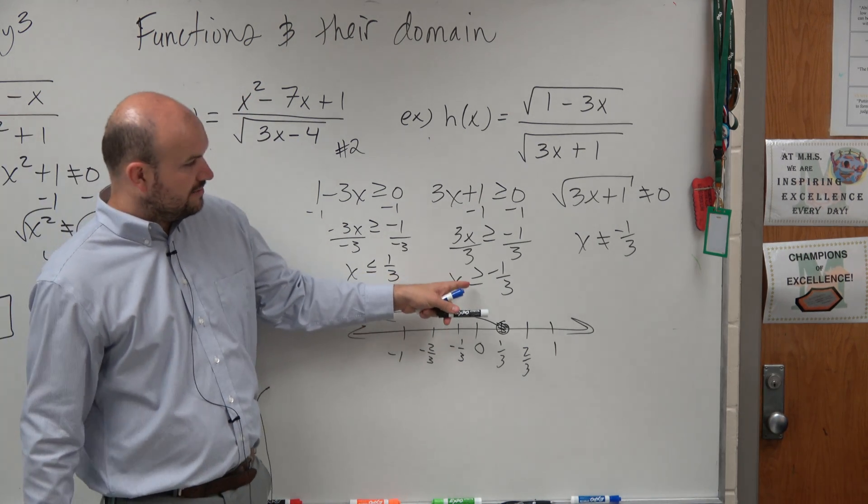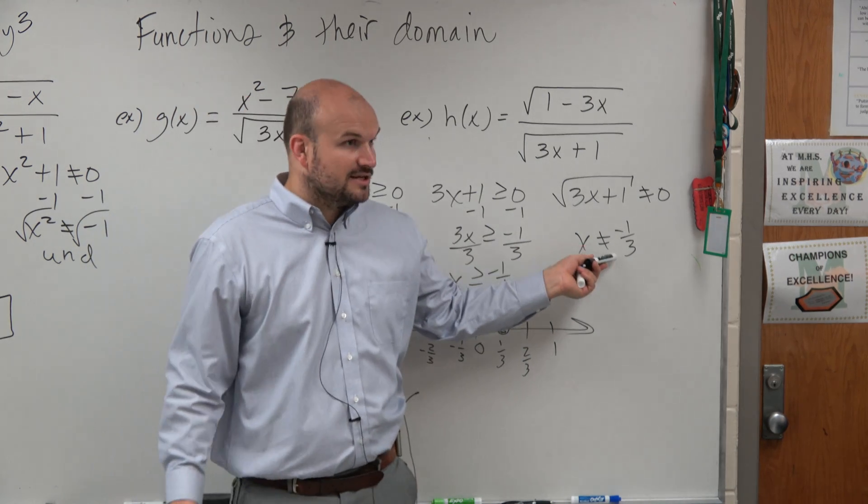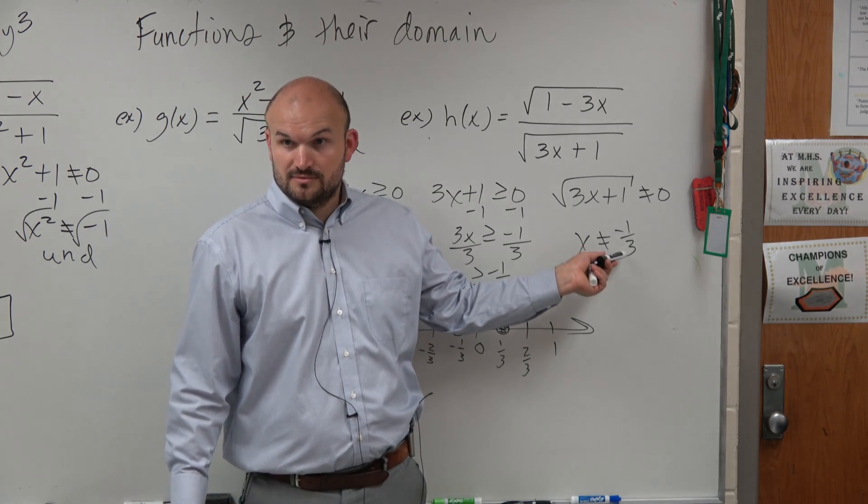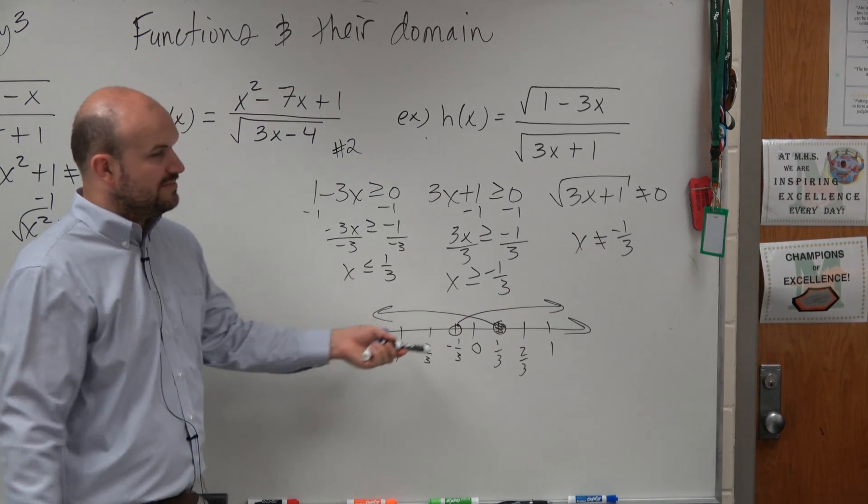The one on the right, x has to be greater than or equal to negative 1 third. I would fill it in, but this inequality says it's not equal to, right? So therefore, it's going to go to the right, but it's going to be an open circle.